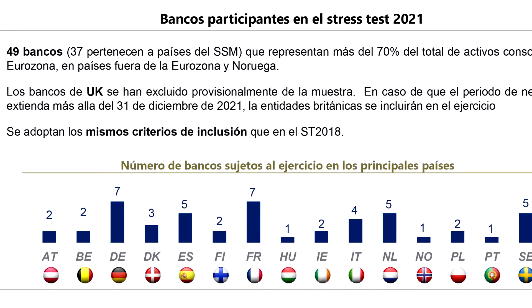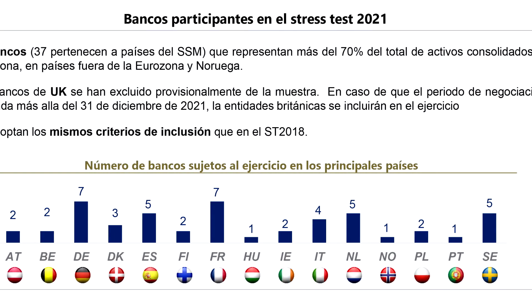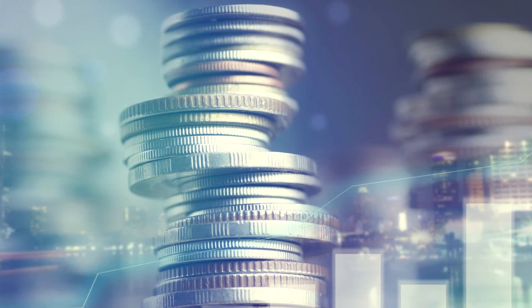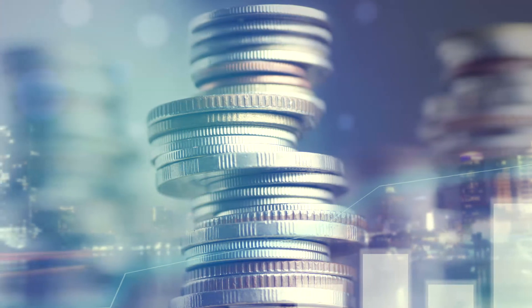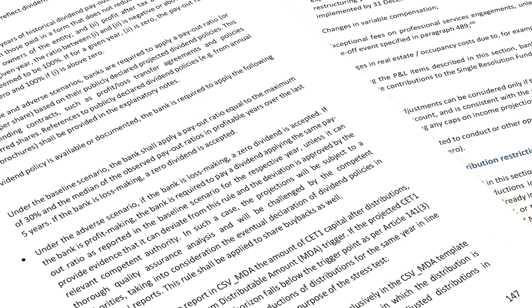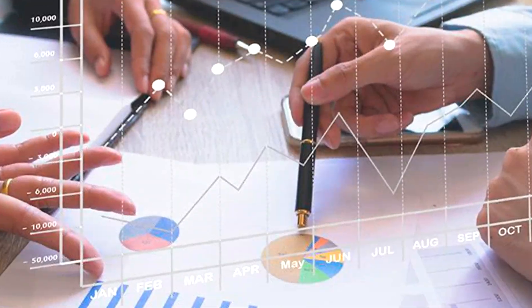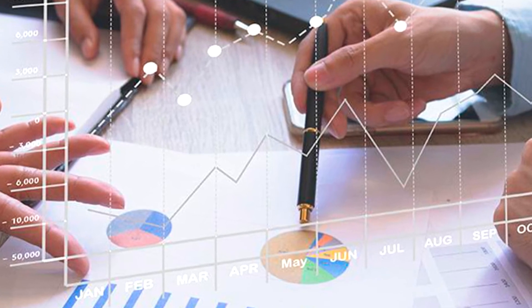The participating EU banks will be 49, as in 2018, and must have a minimum of €30 billion in assets to be included on the list. The set of risks that banks are required to stress are credit risk, market risk, counterparty credit risk and credit valuation adjustment, and operational risk. The stress test exercise will be launched in January 2021 with a publication of the macroeconomic scenarios and the results published by 31 July 2021.